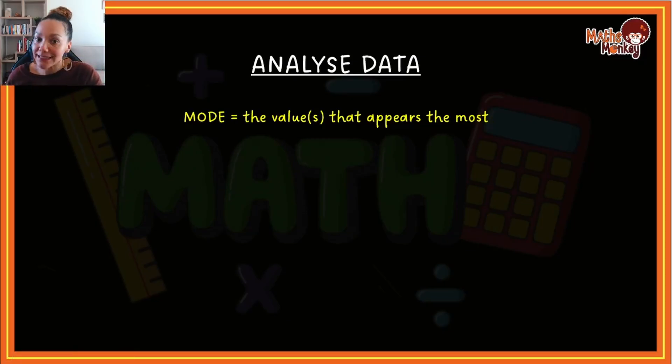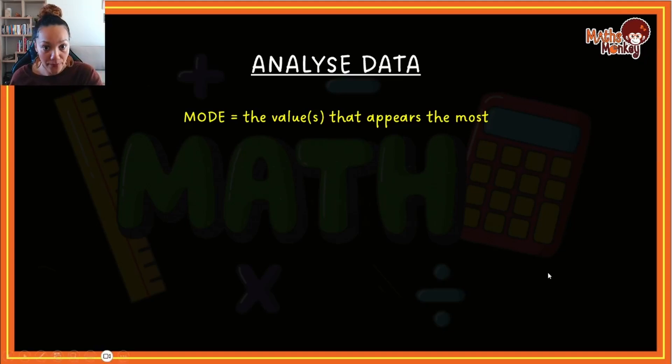Let's go to the same data set. If I look at the first one, there's no number that is being repeated, so there isn't a number that appears the most in this data set, so for A I won't have any mode. Then for B, I've got four 14s but I've got six 16s, so 16 is the number that appears the most in this data set. That means my answer for this would be 16.